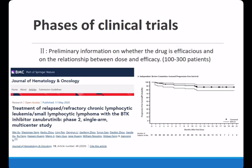Later, they started the Phase 2 clinical trial for Zanubrutinib. These results have already been published in journals. The Phase 2 trial tests preliminary information on whether the drug is efficacious and examines the relationship between dose and efficacy. In this Phase 2 clinical trial, the drug caused a slight reduction in patient mortality.